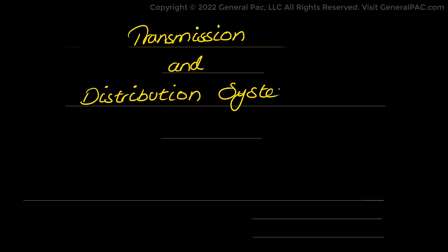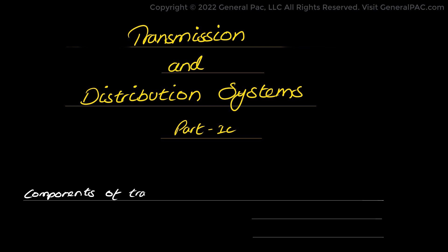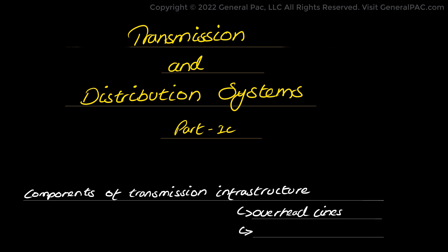Transmission and Distribution Systems Part 1C: Primary Transmission Infrastructure. This is the third part of topic 1 in the series of Transmission and Distribution Systems. In this part we will be discussing the main components of a primary transmission infrastructure, which are overhead transmission lines, along with some of the characteristics and factors that are important in their design.